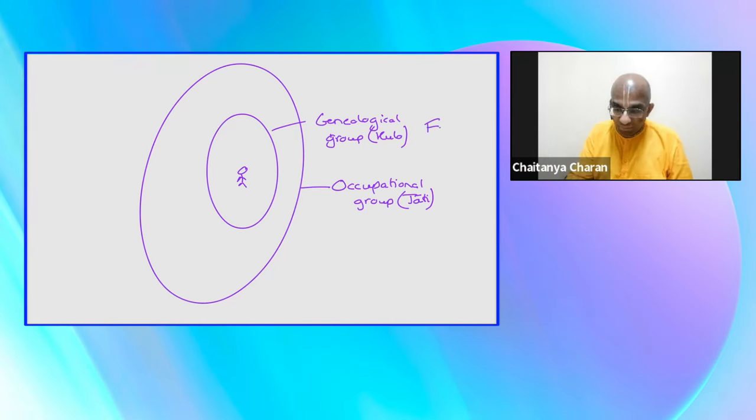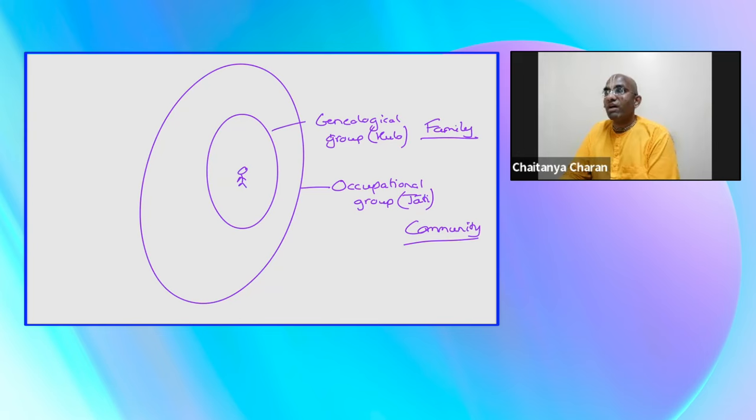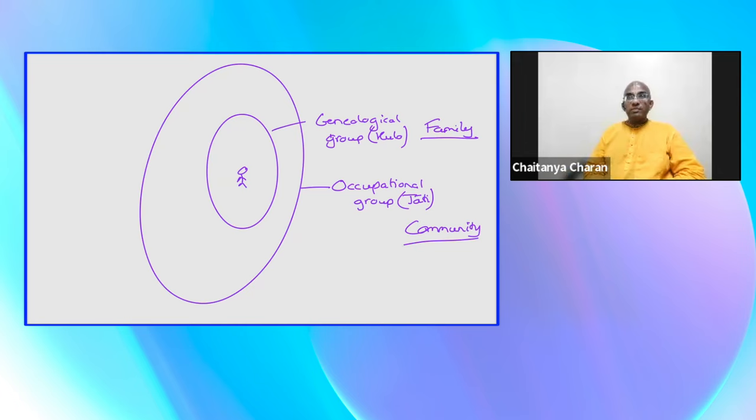You could say that Kula is more a family and Jati is more referring to community. One family is doing, say, the business of weaving. If they are destroyed, that's bad. But if the entire weaver community is destroyed, then that's going to be a significantly more problem. If the entire society is bereft of the community of protectors, then there will be chaos in society. When he's using the word traditions, it's not just some sentimental thing from the past that you have to keep doing.